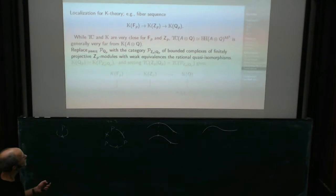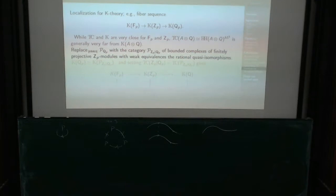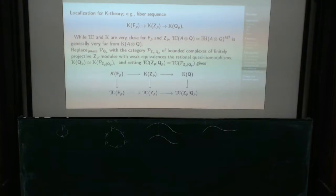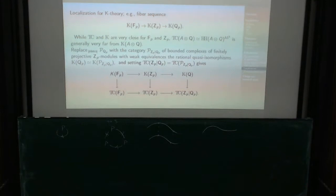Essentially they do that. They consider the category of bounded complexes of finite projective Z_P modules, where the weak equivalences are those that give a quasi-isomorphism upon rationalization. Then you have a localization sequence in K-theory, which actually is the K-theory of the P-adics given exactly by the K-theory of this category of bounded complexes with these weak equivalences. So they set TC of Q_P relative to Z_P to be topological cyclic homology of this category, and they get a localization sequence in TC as well. The situation in K-theory is mirrored very nicely in topological cyclic homology.